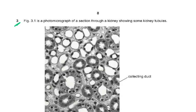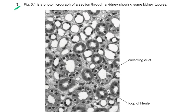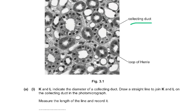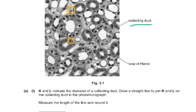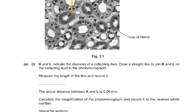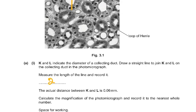Now Question 3: Figure 3.1 is a photomicrograph showing a section through a kidney with some kidney tubules — there is a collecting duct and a loop of Henle labeled as K and L. K and L indicate the diameter of the collecting duct. You had to draw a straight line to join K and L on the collecting duct in the photomicrograph, then measure the length of that line and record it. The measured length was approximately 27 millimeters — always write in millimeters.